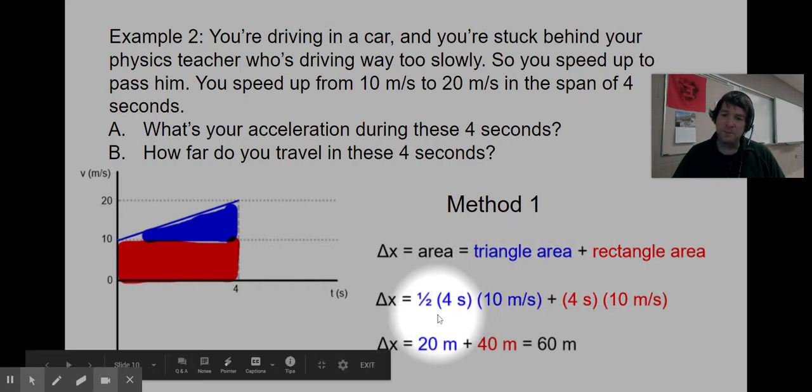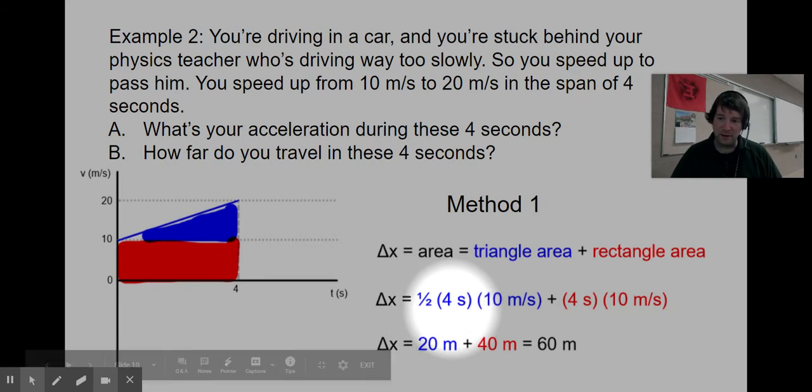The area of the triangle is half times base times height. The triangle is four seconds wide. Notice that the blue triangle is not 20 meters per second tall, even though that is how high up in velocity that highest number is.